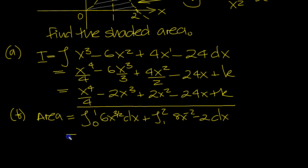So what have we got then? 3 over 2 add 1 is 5 over 2. Divide by 5 over 2. And that needs to be evaluated between 0 and 1. And plus, raise the power by 1. 8x to the minus 1 over minus 1. Minus 2 integrates to 2 times x. And that needs to be evaluated between 1 and 2.